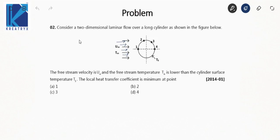Next question: Consider a two-dimensional laminar flow over a long cylinder. The free stream velocity is U∞ and the free stream temperature T∞ is lower than the cylinder surface temperature Ts. The local heat transfer coefficient is minimum at — what do you think? Solve it before seeing the solution.